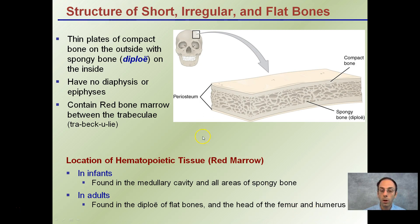As we age, red bone marrow is replaced with yellow bone marrow. However, it is still very important that as adults we retain red bone marrow to generate the necessary cells we need for the circulatory system.